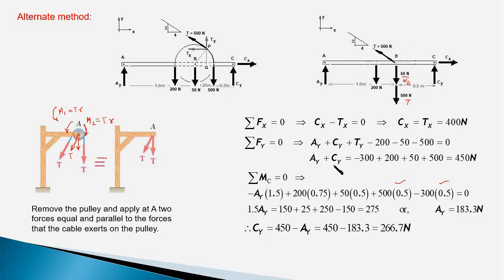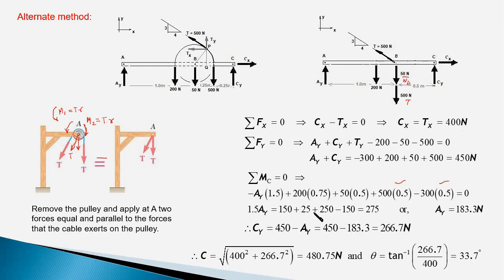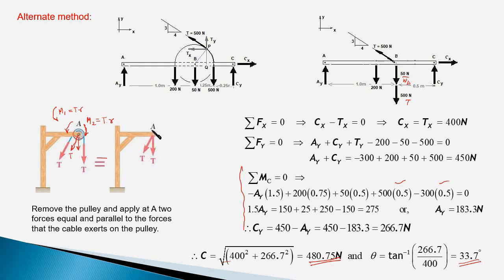We get Cy equal to 266.7 newtons and Cx equal to 400 newtons, giving the resultant C equal to 480.75 newtons at an angle of 33.7 degrees — the same answer as before, but with much easier calculation. This technique of transferring cable tension forces from the rim of a pulley to its pin is not specific to this problem; you can use it conveniently in any other problem. Please let me know your thoughts in the comments below, leave any questions there, and if you liked the video please like, share, and subscribe. Thanks for watching.